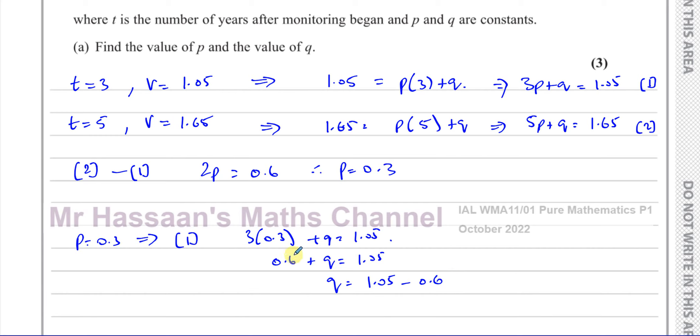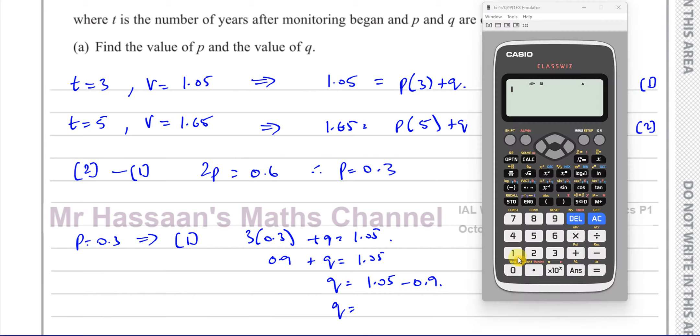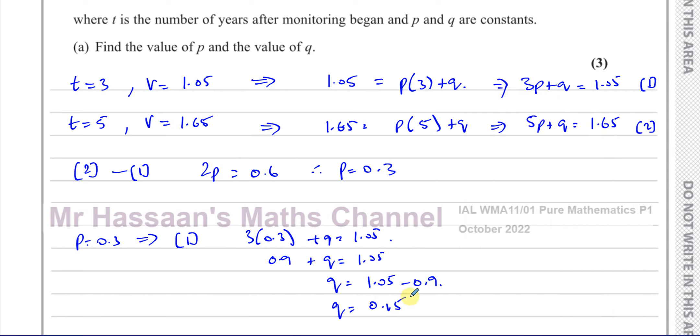Sorry, that's 0.9, isn't it? My bad there. So Q is 1.05 minus 0.9. Let's work out what that is. So we have 1.05 minus 0.9, and that gives us 3 over 20, which is 0.15. So we end up with P equals 0.3 and Q equals 0.15.